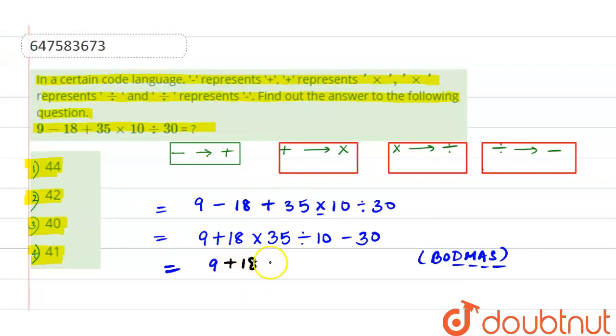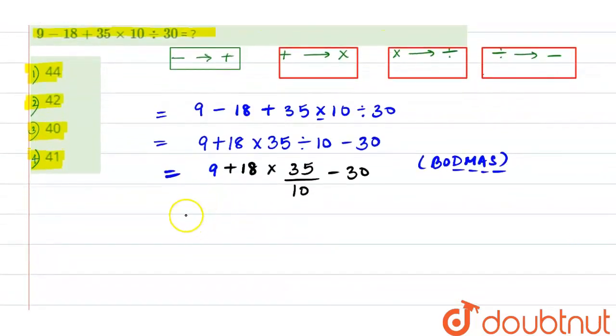9 plus 18 multiply by 35 divided by 10 minus 30, right? So let's solve this. It will be equal to - this will cancel: 35 by 10 becomes 7 by 2, and 18 becomes 9 times 2. So we have 9 plus 9 multiply by 7 minus 30.